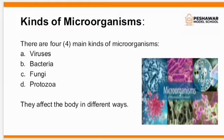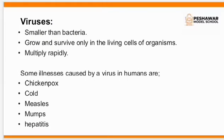Let's study about viruses. They are smaller than bacteria. They grow and survive only in the living cells of organisms and they multiply rapidly. Always remember that viruses are smaller than bacteria, but they grow and survive only in the living and active cells of organisms, and they multiply rapidly — meaning very fast. Some illnesses caused by viruses in humans are chickenpox, cold, measles, mumps, and hepatitis.